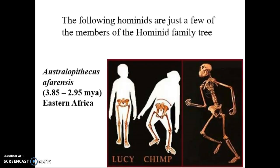Australopithecus afarensis are always found in Africa — we find no evidence of this species anywhere else on the planet. Time frame: about 3.85 to roughly 2.95 million years ago — an early, early ancestor. Remember, hominids split from the apes 6 to 10 million years ago, so there are ancestors in between — go to the Smithsonian site for those. Australopithecus afarensis is the famous Lucy skeleton, or the Lucy species. She was one of the earliest fossils discovered showing hominids. From the waist up you'd think that's an ape, but from the waist down — hominid.